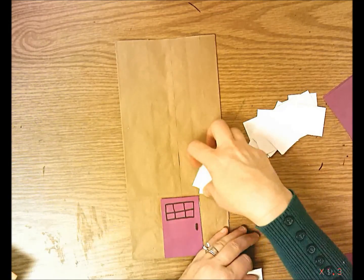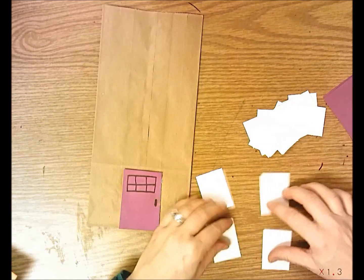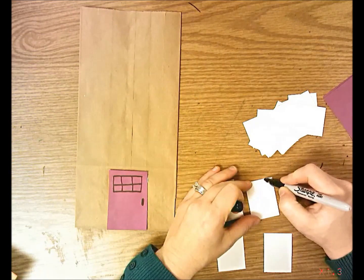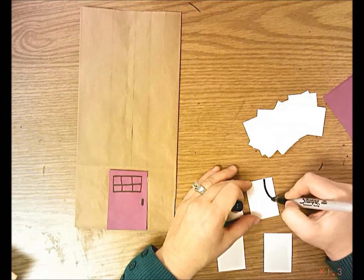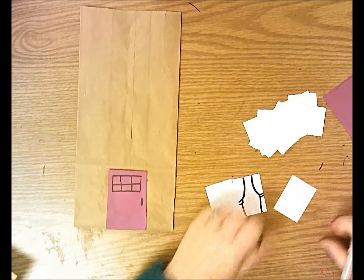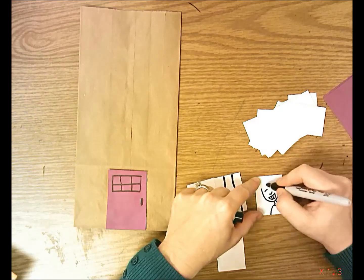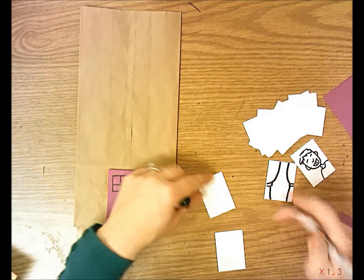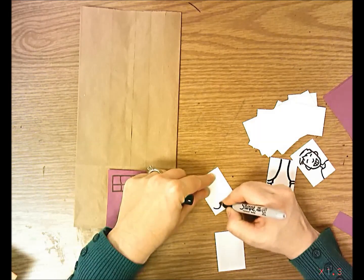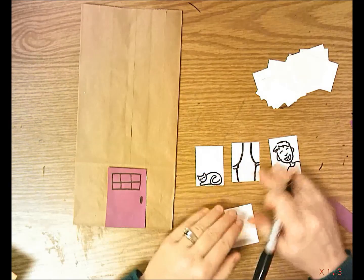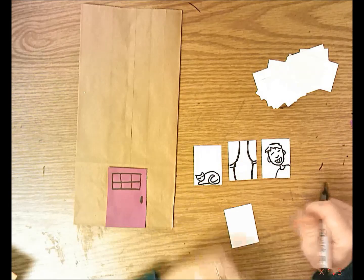The first thing I want you to think about is what do you want to put in your windows? Do you want to put some curtains hanging? Or do you want to put somebody in the window looking out? Maybe you could put a cat sleeping in the window, or maybe your window's empty. If you draw something in your windows, you can leave them like this.